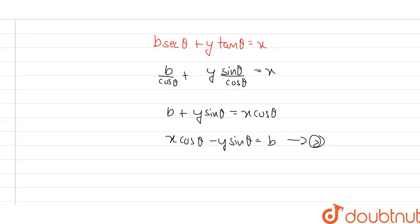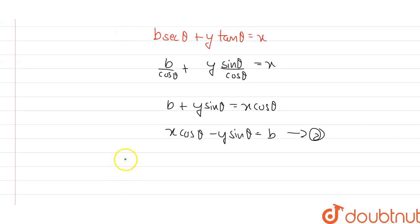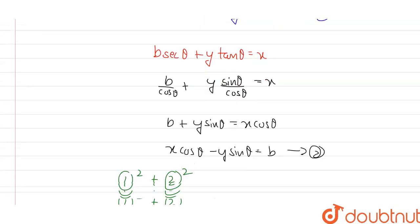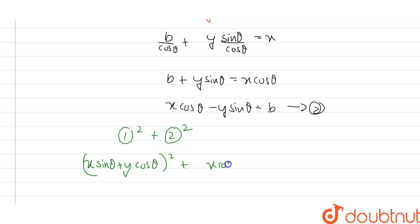Now I'm going to square and add these two equations. Equation one squared: (x sin θ + y cos θ)² and equation two squared: (x cos θ − y sin θ)², and their sum equals a² + b².